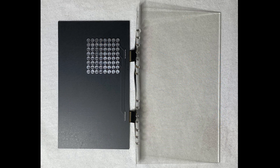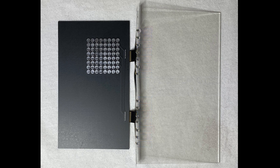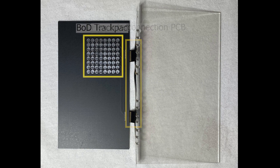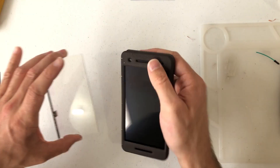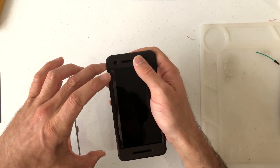To implement this design, we use transparent indium-tin oxide, or ITO, electrodes coated on thin glass. The ITO electrodes are connected through a flexible PCB to the 2D trackpad on the back of the device. We place it on top of the front screen, just like a screen protector.